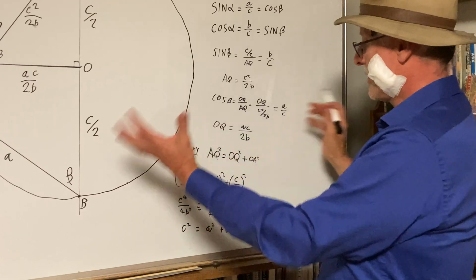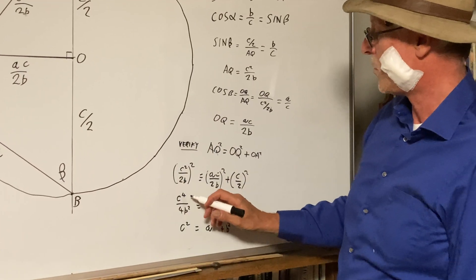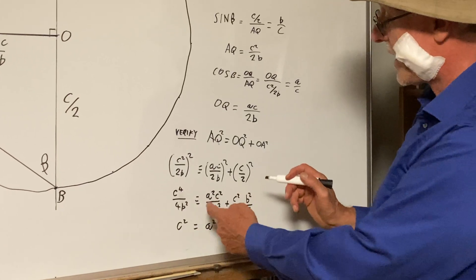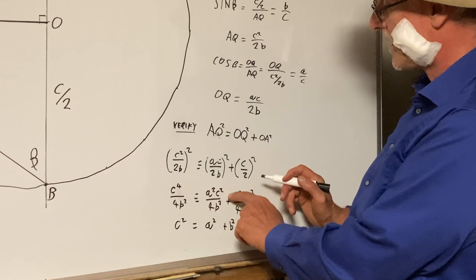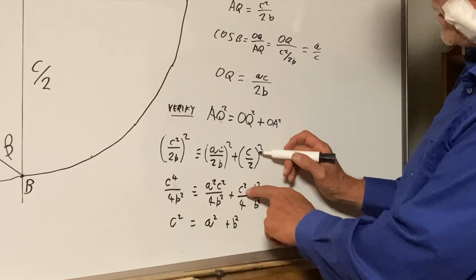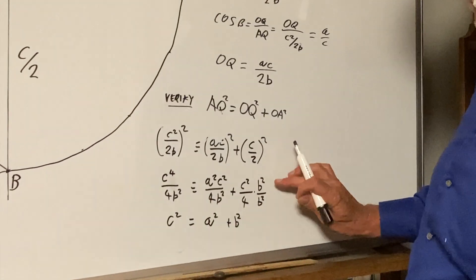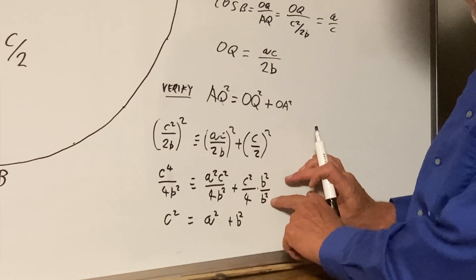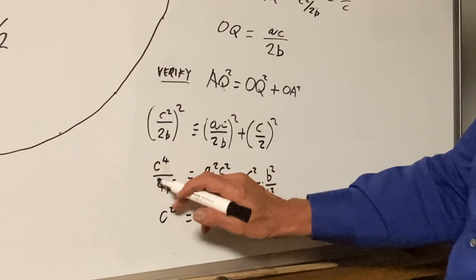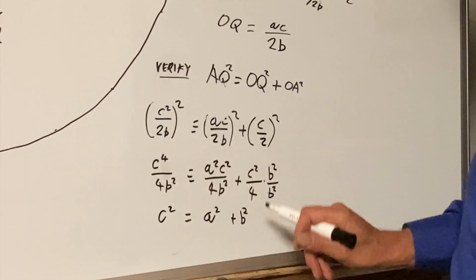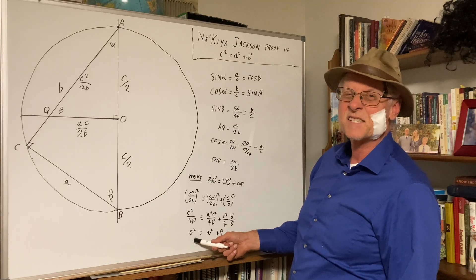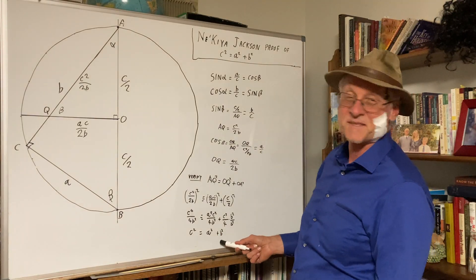Well, now you just crank it through. C to the fourth over 4B squared, does that equal A squared C squared over 4B squared, plus C squared over 4, multiplied by B squared to normalize the denominator. Then you cancel out, simplify, and sure enough, you get C squared equals A squared plus B squared.